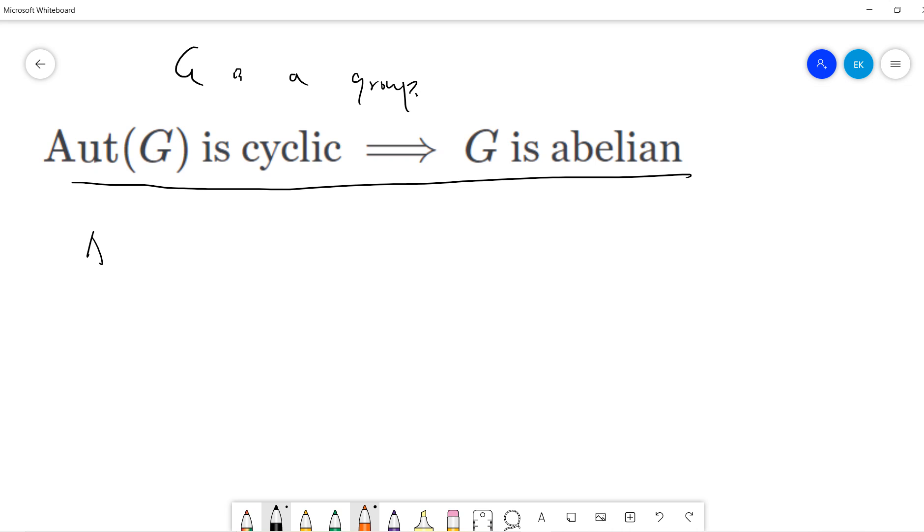Let me give you a quick definition. An automorphism of G is a homomorphism from G to G where F is an isomorphism. So F is injective and surjective.